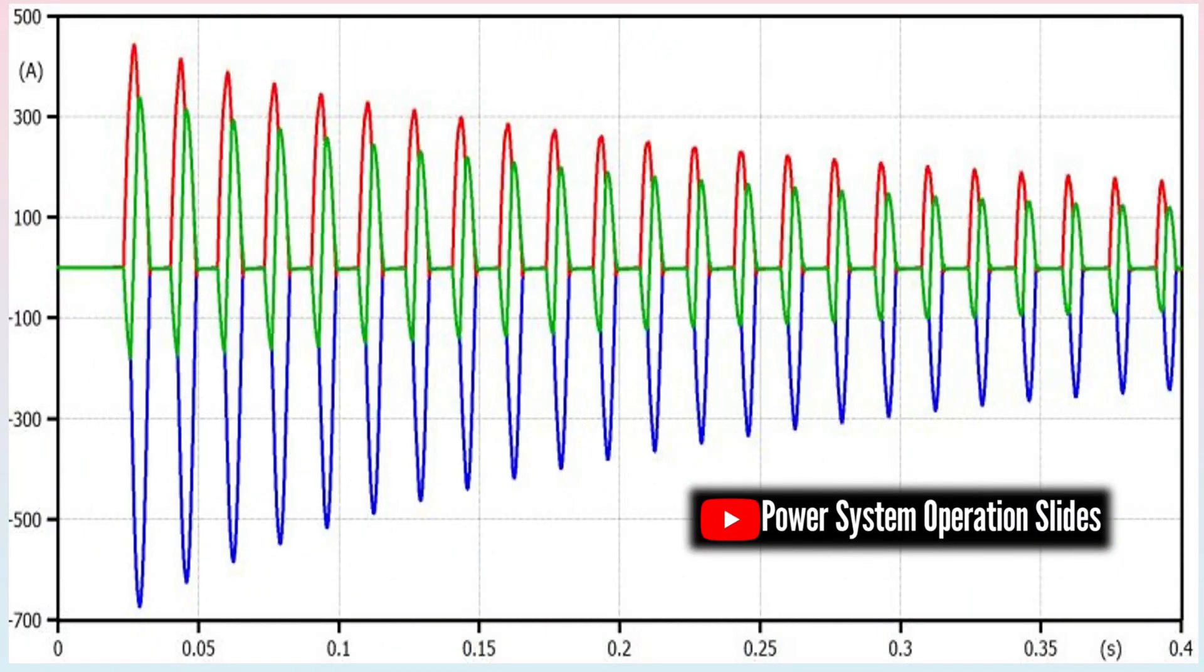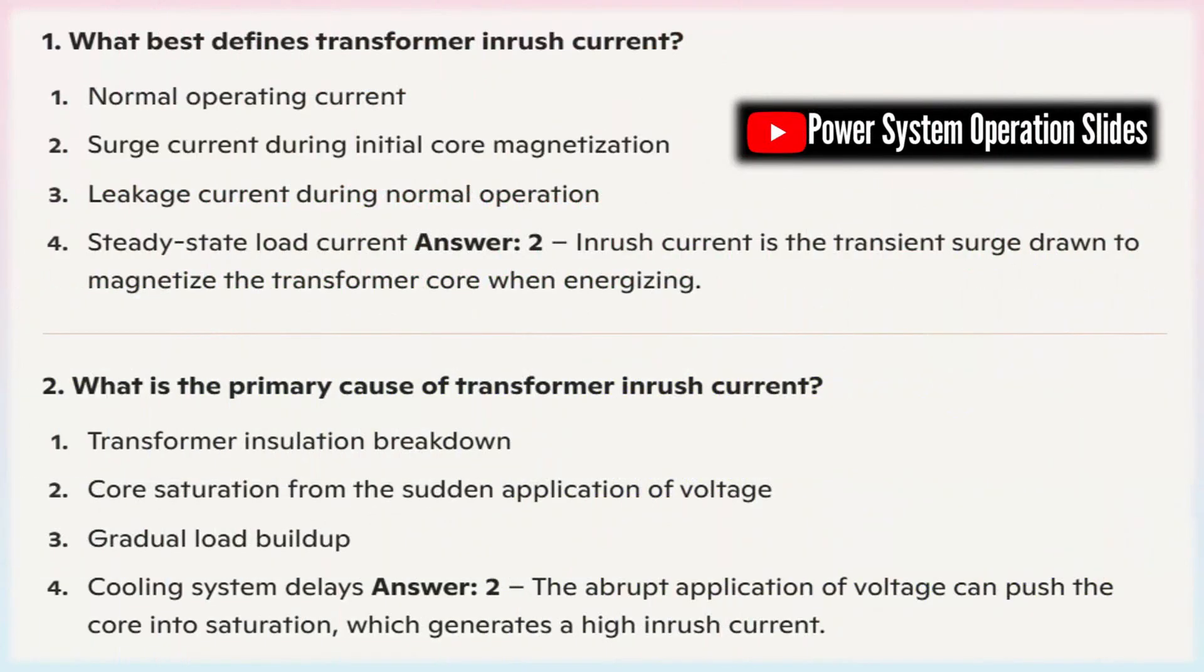Specific transformer design: The design of the transformer, including its winding configuration, insulation, core material, and even physical construction, affects the magnetizing impedance. These design elements dictate the amount of exciting current needed to build the initial magnetic flux in the core. A transformer designed with features that help delay saturation or distribute the induced flux more evenly will typically exhibit a lower inrush current compared to one that saturates more abruptly.